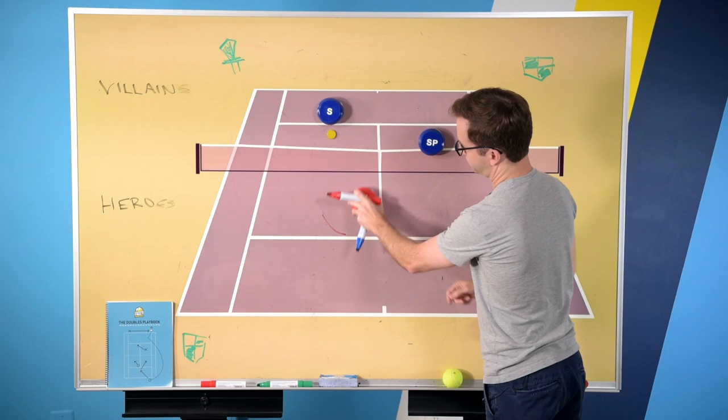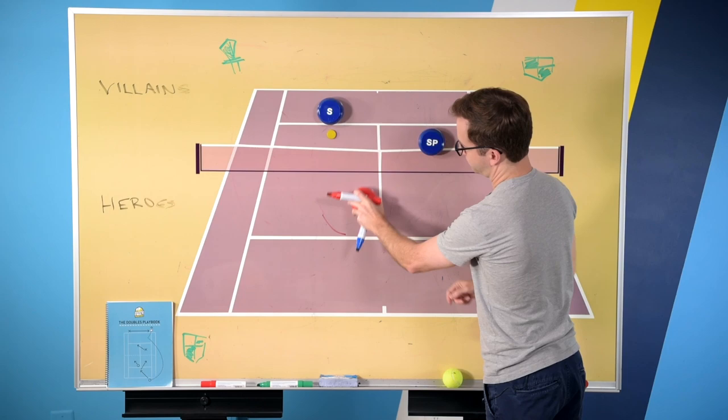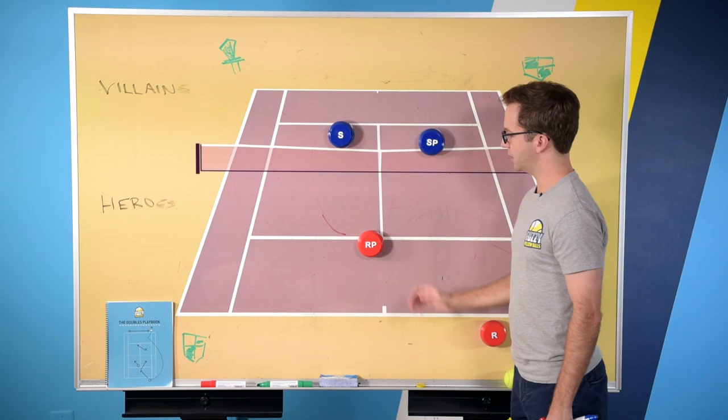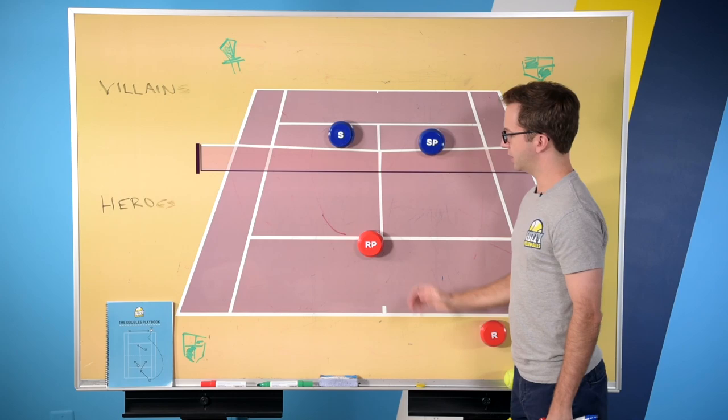And if they don't get it, then the returner's partner would retreat back here, server continues to close, but then the returner in this case can be here and then rip another ground stroke and try and set their partner up to pick off the next shot.